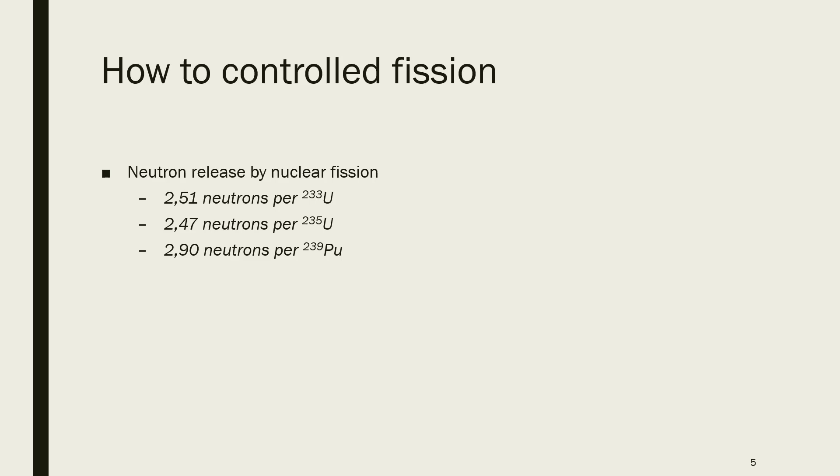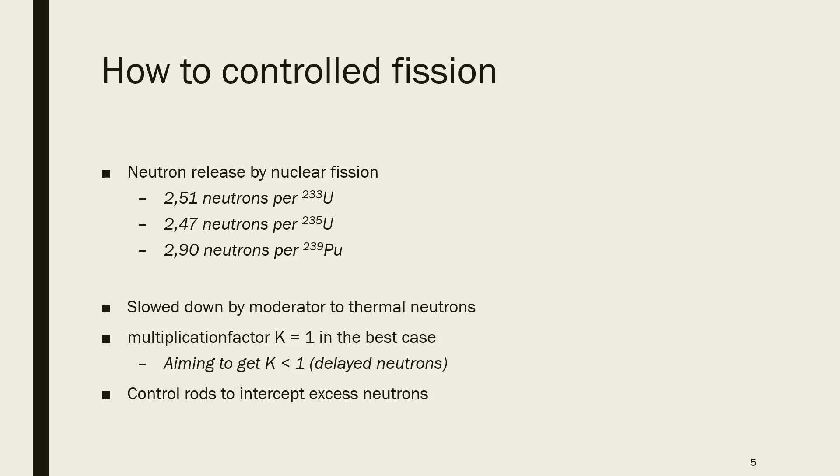And also the fission neutrons, so the neutrons that get ejected from fissions, they are fast neutrons. And you are more likely to make a fission happen if you were working with thermal neutrons. So you have to slow them down. This slowing down to thermal neutrons happens via a moderator, for example graphite or light water. And in a nuclear reactor, you are aiming for a multiplication factor of k equals 1, so one neutron coming in and one neutron from this fission set neutrons will induce fission in another atom.